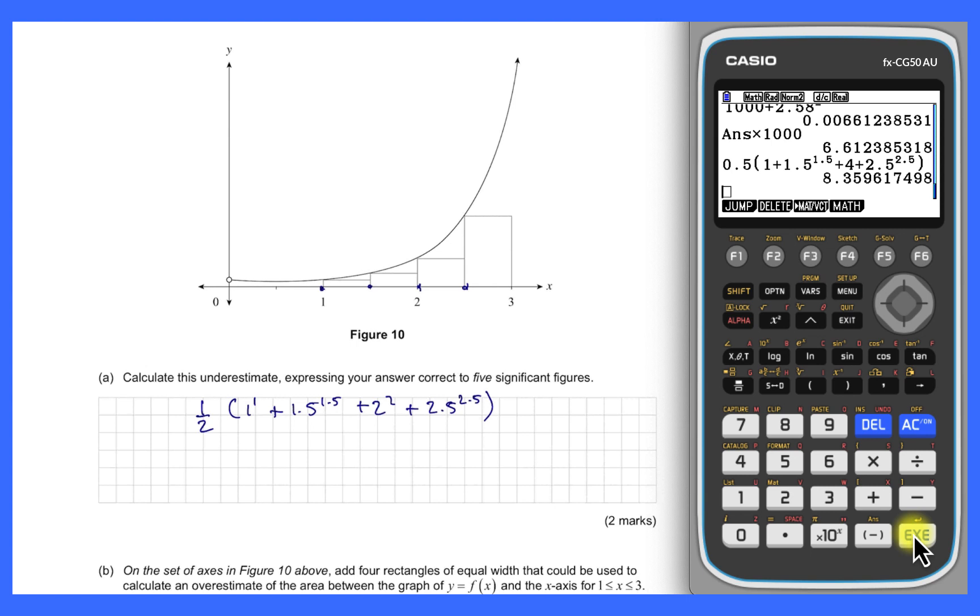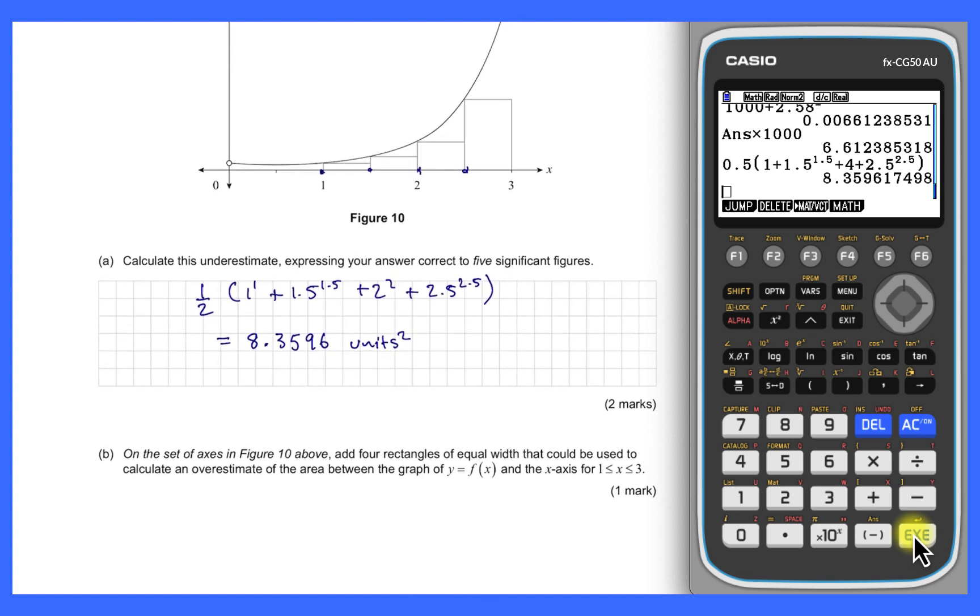And there's my value with all its decimal place glory. We wanted five significant figures, so that's equal to 8.3596. Okay, beautiful. We could maybe write here units squared because there's an area calculation. The next part says, on the set of axes in figure 10, add four rectangles of equal width that could be used to do an overestimate of that same area.